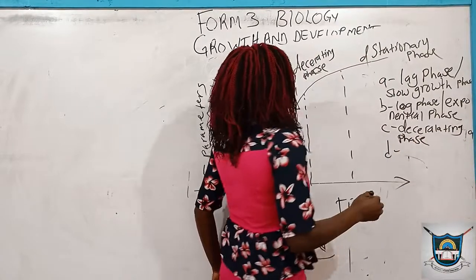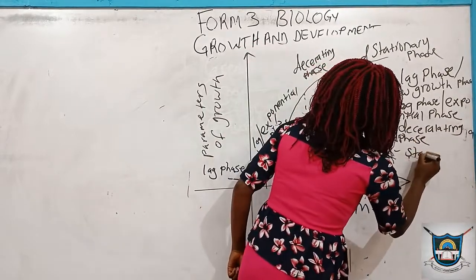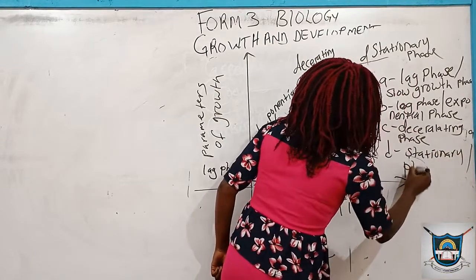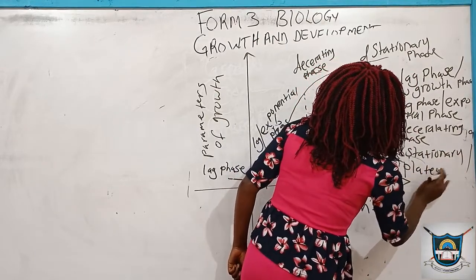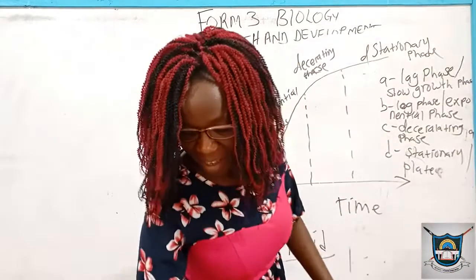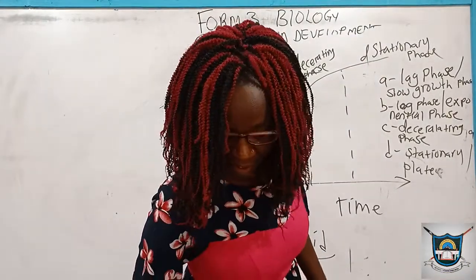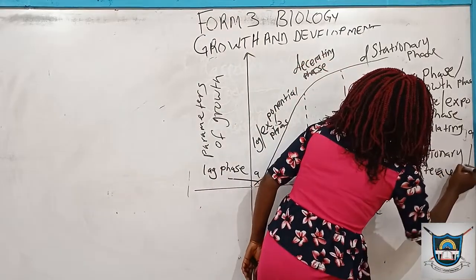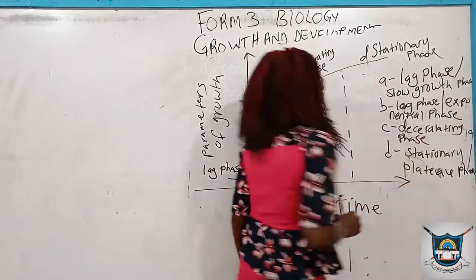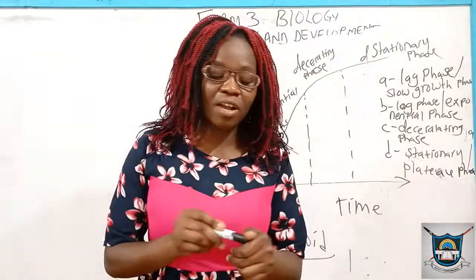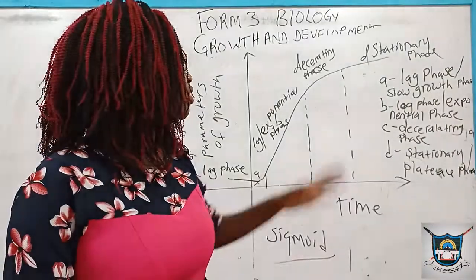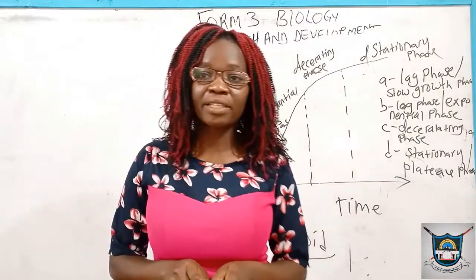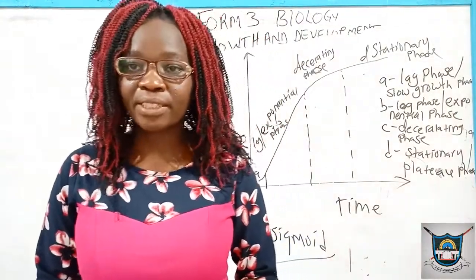And the fourth phase is called the stationary phase, which is also called the plateau phase. Next time we will look at those factors that cause different growth rates in those various phases. Then we will meet next time.